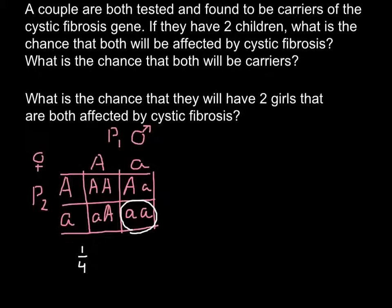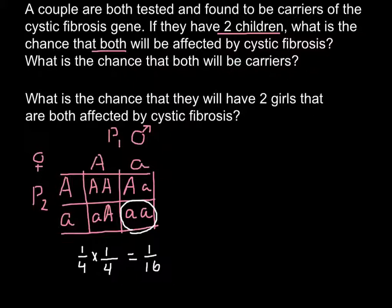So we have a one-fourth chance that this couple would have an affected child. In our first question, if this couple would have two children, what is the chance that both would be affected by cystic fibrosis? That means we have a one-fourth chance for the first child to be affected, and the same chance — one-fourth — for the second child. Now we have to use the rule of multiplication, and our answer for this first question would be one-sixteenth.